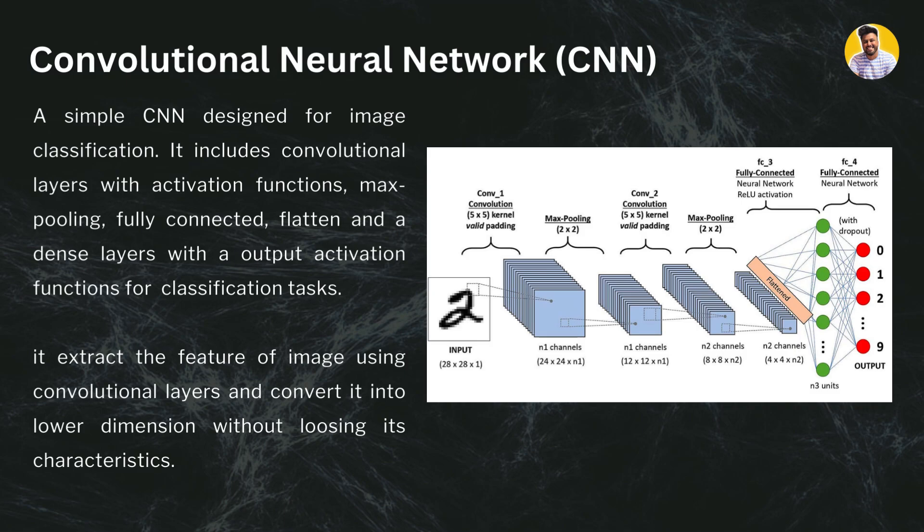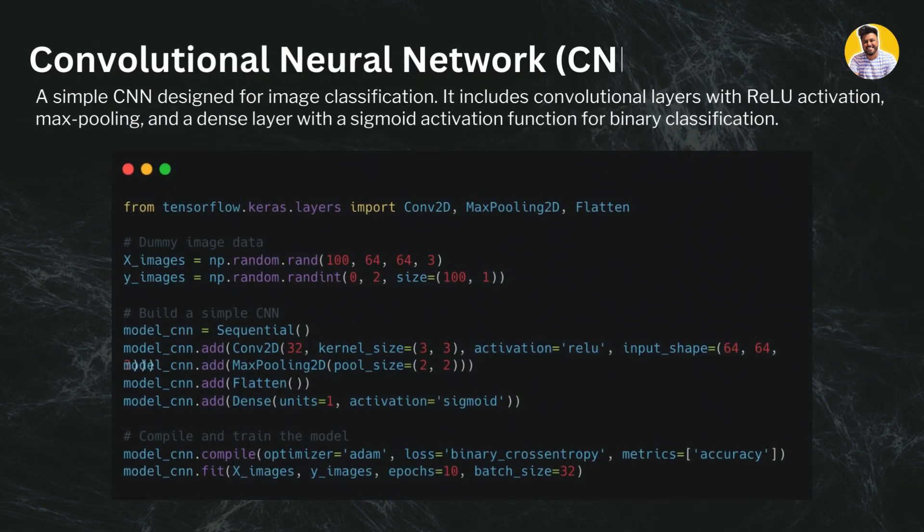The convolutional layers are helpful for feature extraction because they convert the data to lower dimensions. Since image data is very high-dimensional, these layers help the neural network extract features and lower the dimensionality of the data.